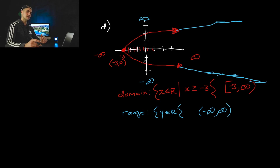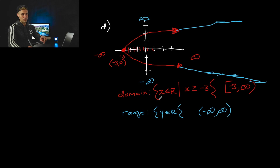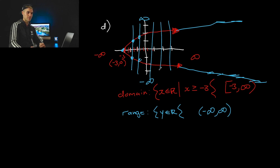Compare this sideways parabola to the regular parabola in part C: with the regular parabola there was no restriction on the domain but there was a restriction on the range. Here it's inverted — the sideways parabola has a restriction on the domain and no restriction on the range. That's because a sideways parabola is the inverse of a regular parabola. And this fails the vertical line test almost everywhere, so a sideways parabola is never a function.